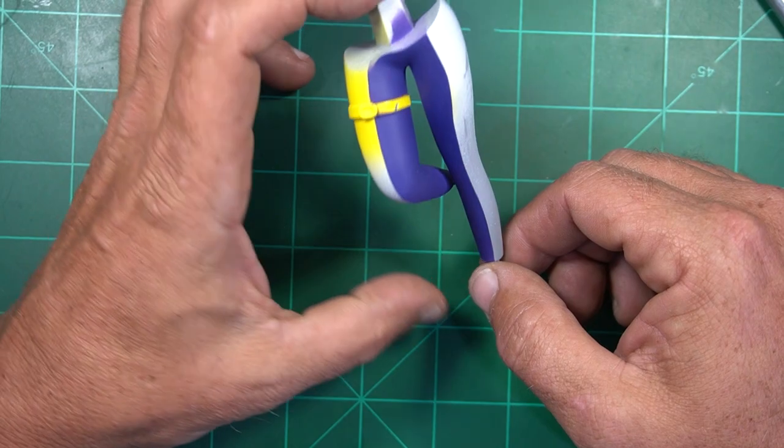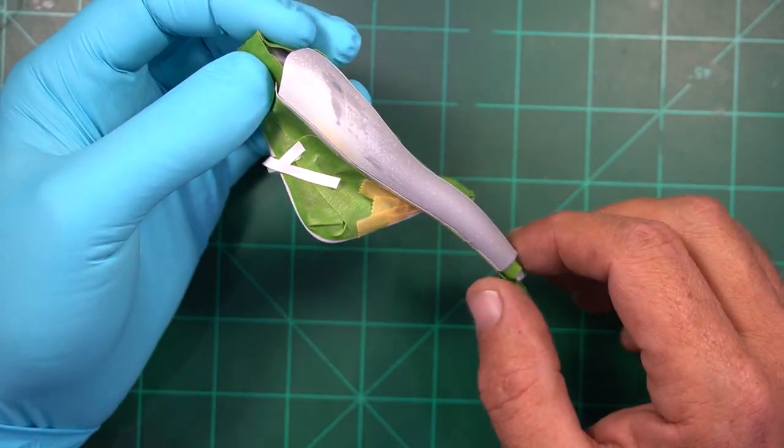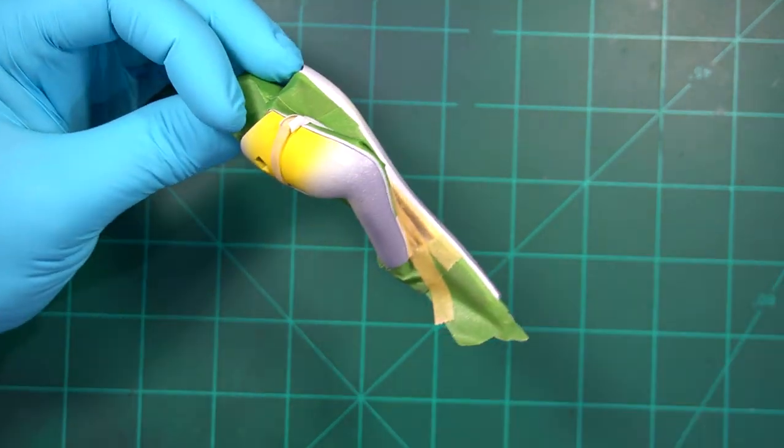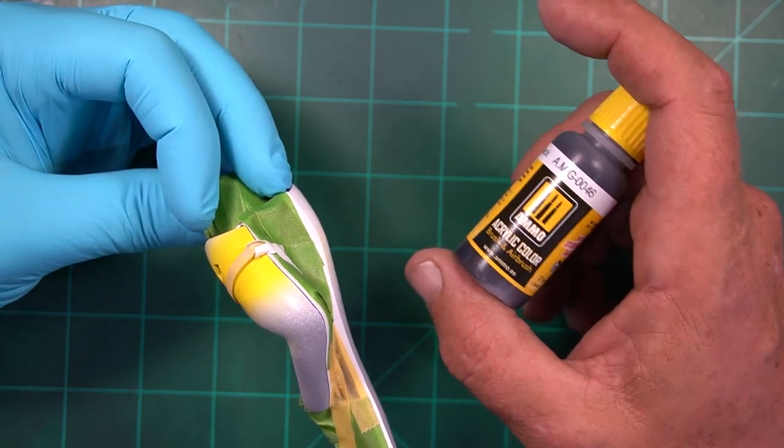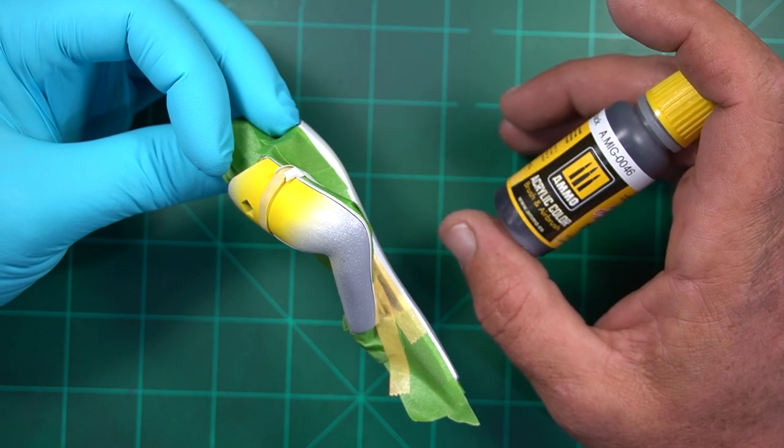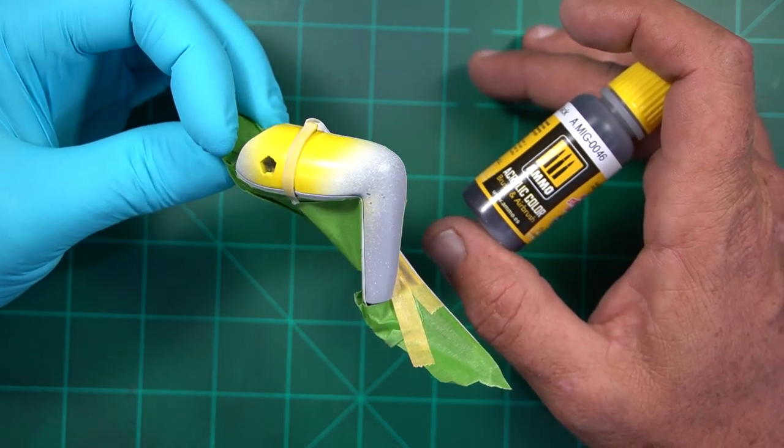Now time to tape up the violet and then we'll get onto the black. Round two of masking is done. Next up is going to be the black. I'm actually going to be using Ammo by MIG flat black. The only reason I'm doing that is because I'm a little lazy and I don't feel like thinning down the Scale 75. I can just drop this in the pot and go right to spraying and get this done a little quicker.